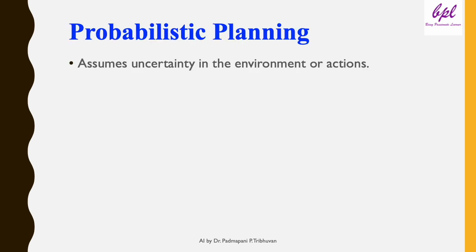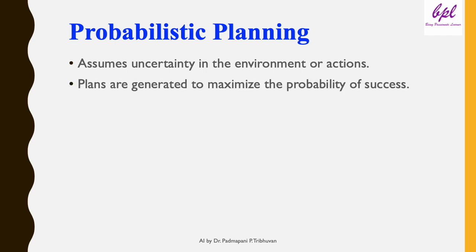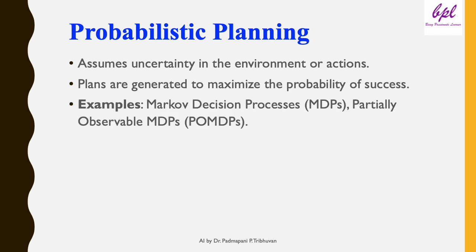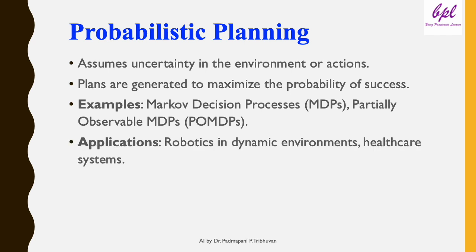Probabilistic planning assumes uncertainty in the environment or actions. Plans are generated to maximize the probability of success. Examples include Markov Decision Processes (MDPs) and Partially Observable MDPs (POMDPs). Applications include robotics in dynamic environments and healthcare systems.